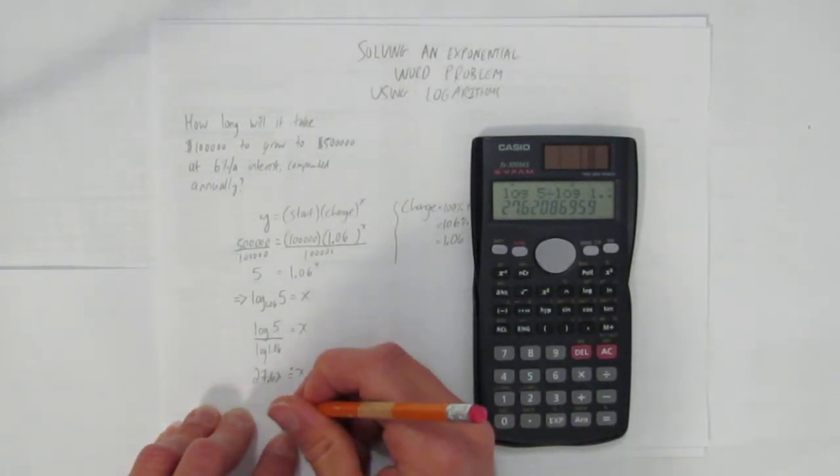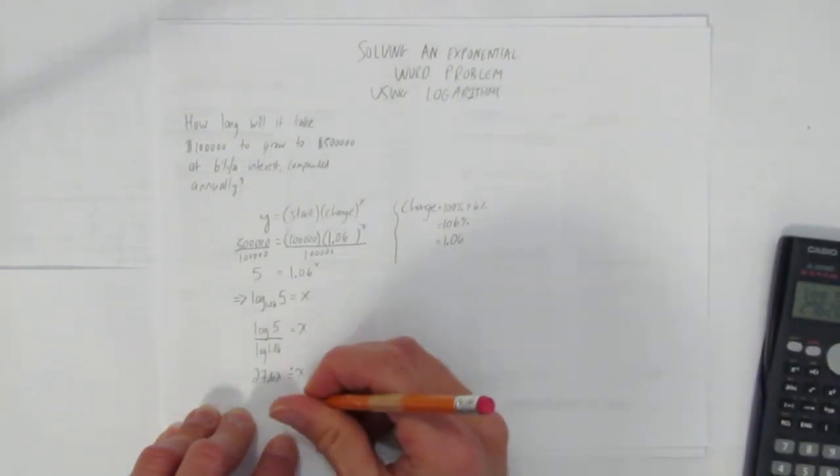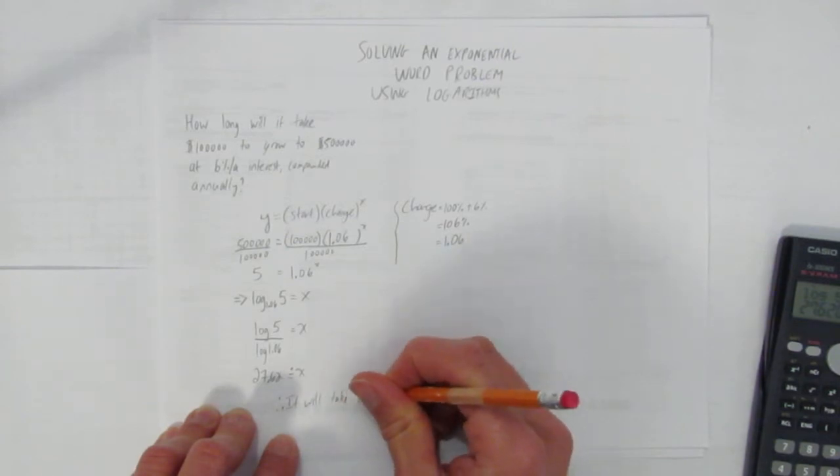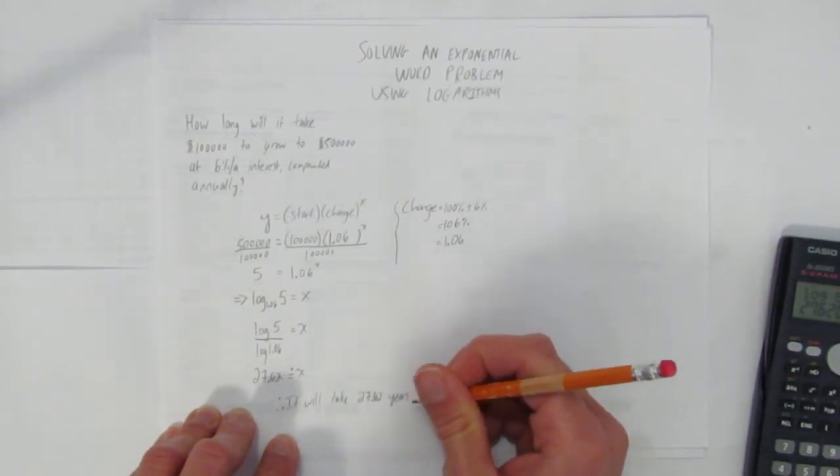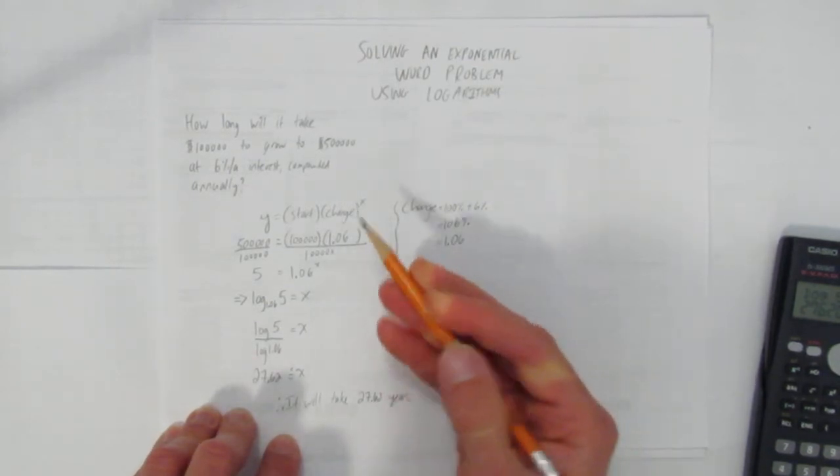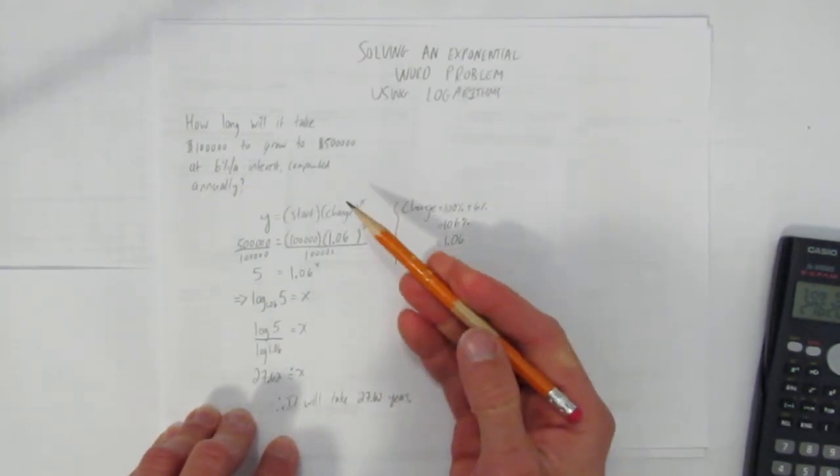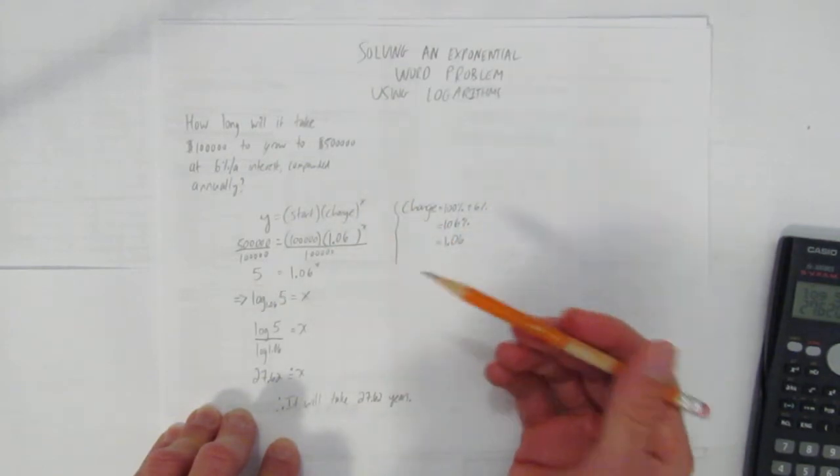And it's a word problem, so I need a word answer. Therefore, it will take 27.62 years, which is a long time. But then again, you also have five times as much money. Your $100,000 grew to $500,000 doing nothing, just sitting there.